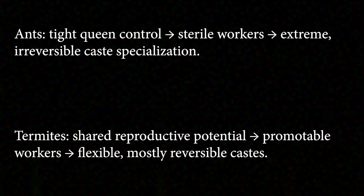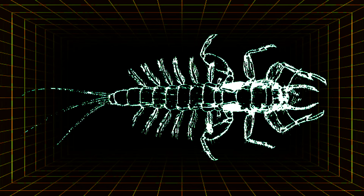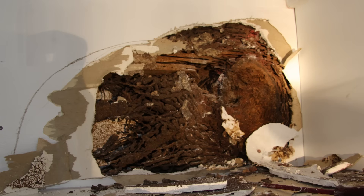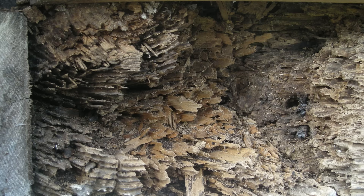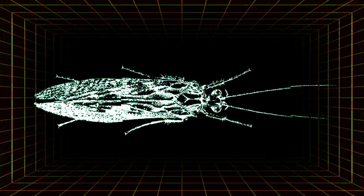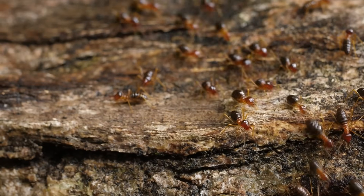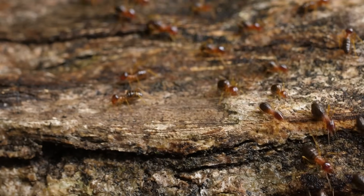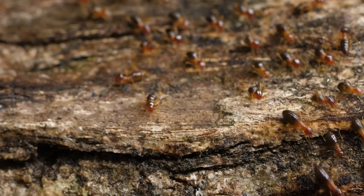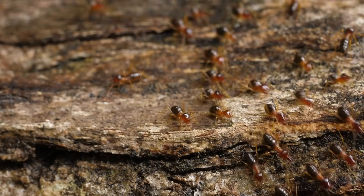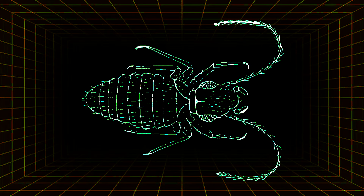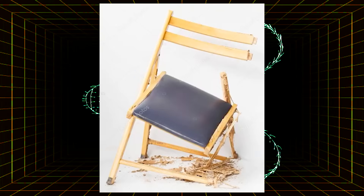Termite relationships with humans are complicated. On one hand, they're infamous for chewing through wooden structures, causing billions of dollars in property damage each year. In North America, it's actually an invasive species that has caused most of this damage. Their hidden colony-based tunneling makes them hard to detect and even harder to evict, in that you can have termites and not even know it because they have no problem working in the dark. This can cause wooden furniture to collapse, and even entire buildings.